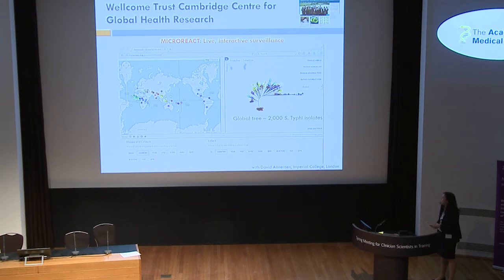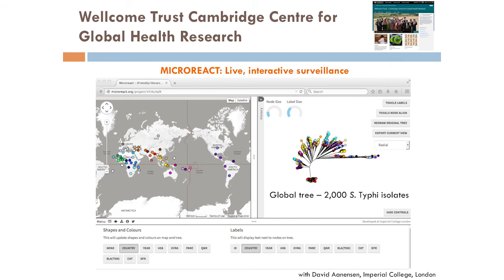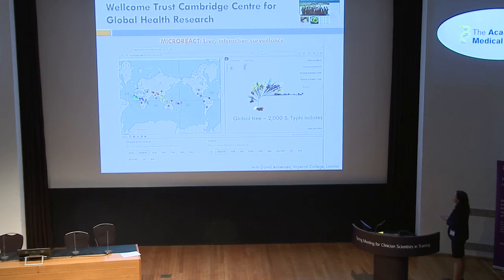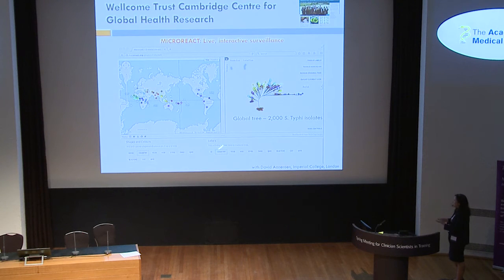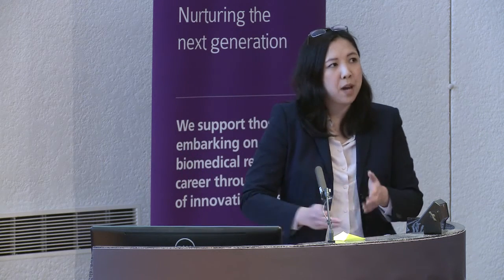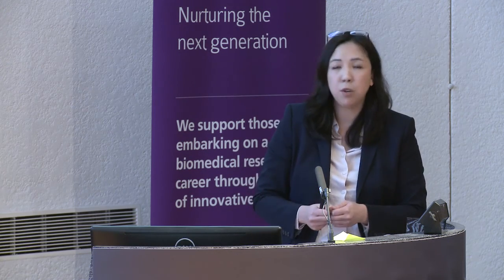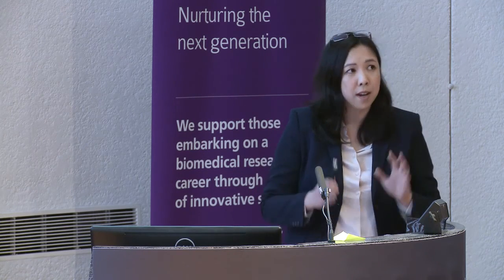The other development coming out of this is a surveillance programme. The typhoid data is being used as a framework for future surveillance of other pathogens with the Global Health Research Centre. I'm working with David Anderson from Imperial College to get the typhoid data onto a live interactive surveillance website called Micro React. On the right you have the global tree highlighted by country, and on the left the world map with corresponding isolate locations. You can filter by country, year, H58 status, gyrase A mutations, and so forth. People will be able to upload new sequence data to be incorporated into the global tree, making it a continuous live updated surveillance programme accessible to everyone.